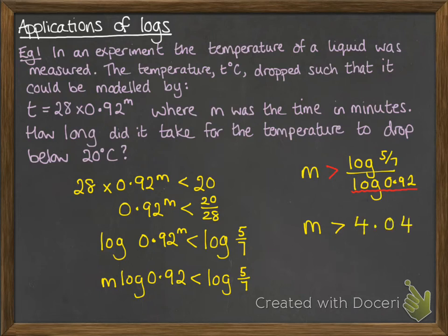If we work out log of 5 sevenths divided by log of 0.92, you'll get 4.04. So M has to be greater than 4.04. The number of minutes that it takes for the temperature to be recorded below 20 degrees C will be 5 minutes.